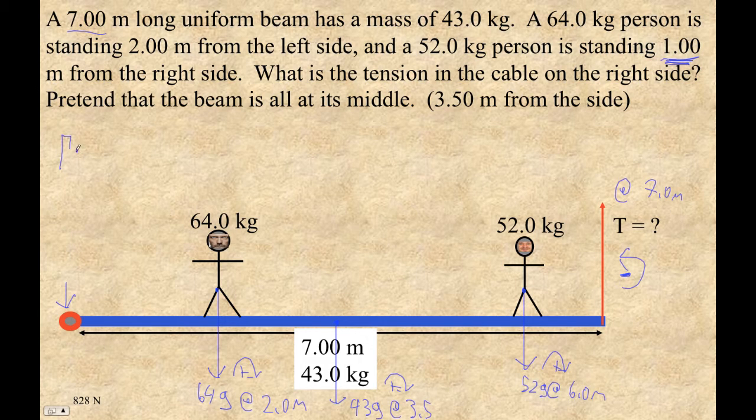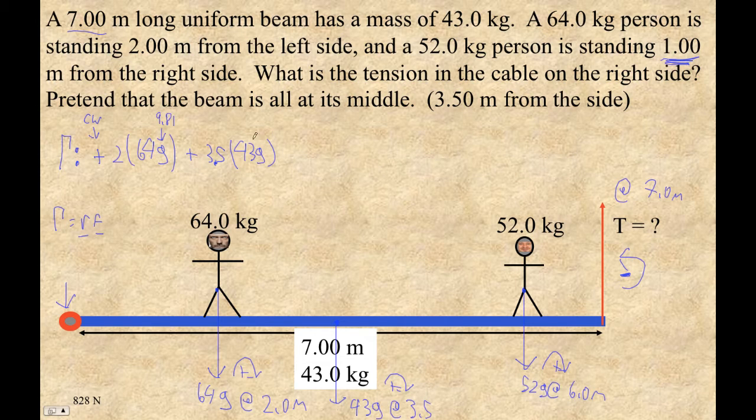Okay, so let's set up our torque. Torque is, let's see, clockwise, this guy, 2 meters, so positive 2, positive is because it's clockwise. Positive 2 times 64 G. Plus 3.5, formula being torque is RF. So R times F, so 3.5 is our R times 43 G. Again, the G's are, that's 9.81. I'm just too lazy to write it, so I write it anyway. Then this guy here is going to be plus 6 times 52 G, and minus 7 times T is 0.